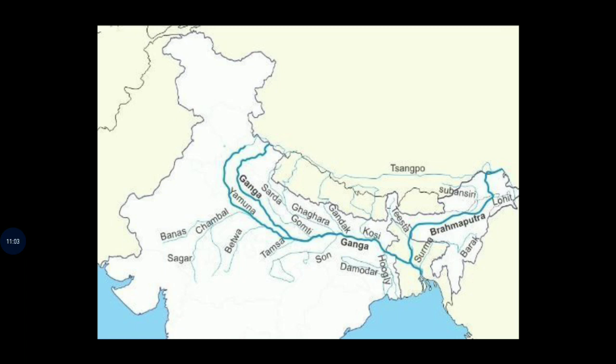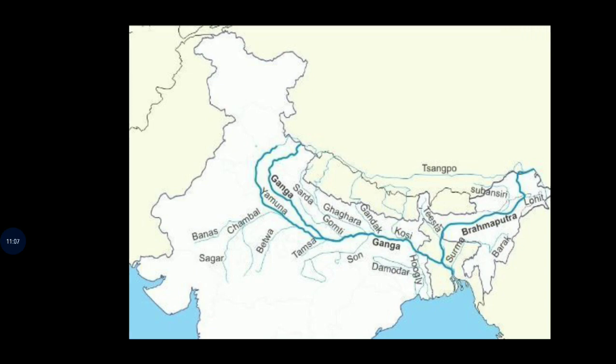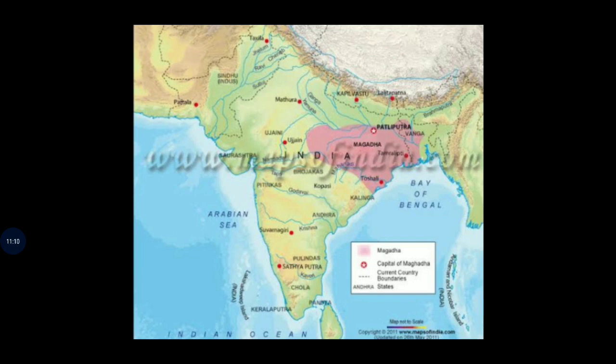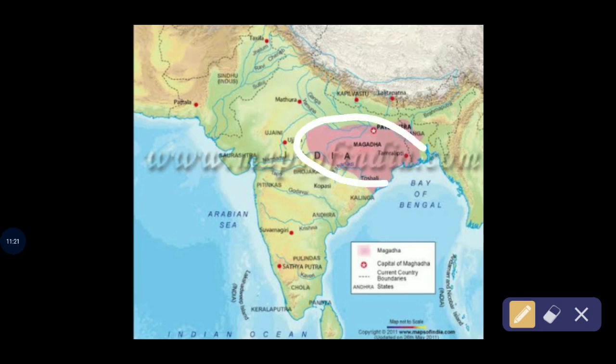In ancient times, the area along these rivers to the south of the Ganga was known as Magadha, which is now in the state of Bihar, shown here in pink color on the map.